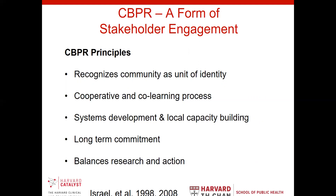Having a long-term commitment with your partners is really essential, especially in implementation science, which occurs over a long period of time. If you don't have those long-term commitments, you can get started and not have the ability to continue those partnerships. CBPR also balances research and action, and this is where co-leadership can be really helpful. While you're doing research, there are also many active steps that can be taken to improve circumstances for the partners and for the surrounding communities.